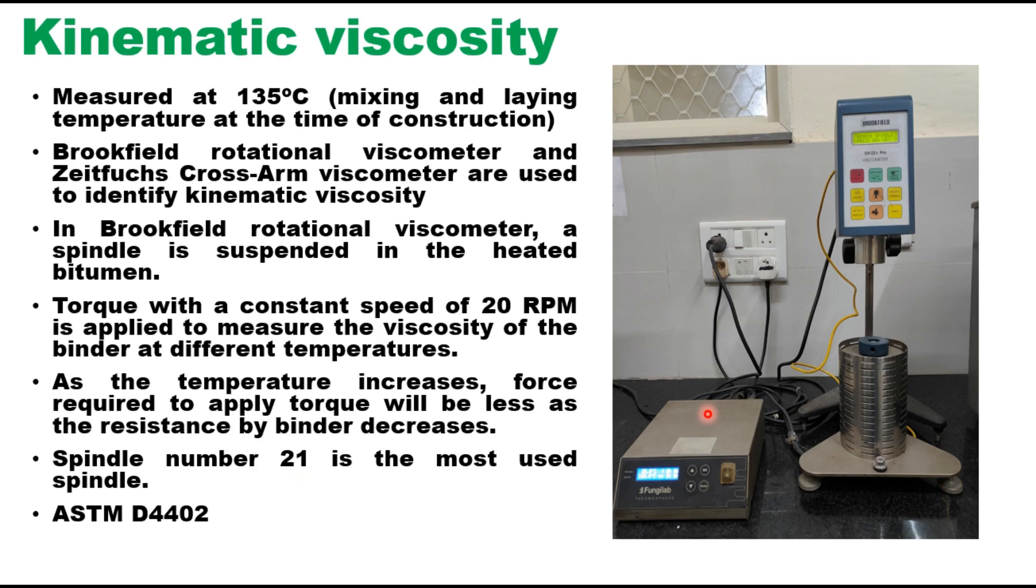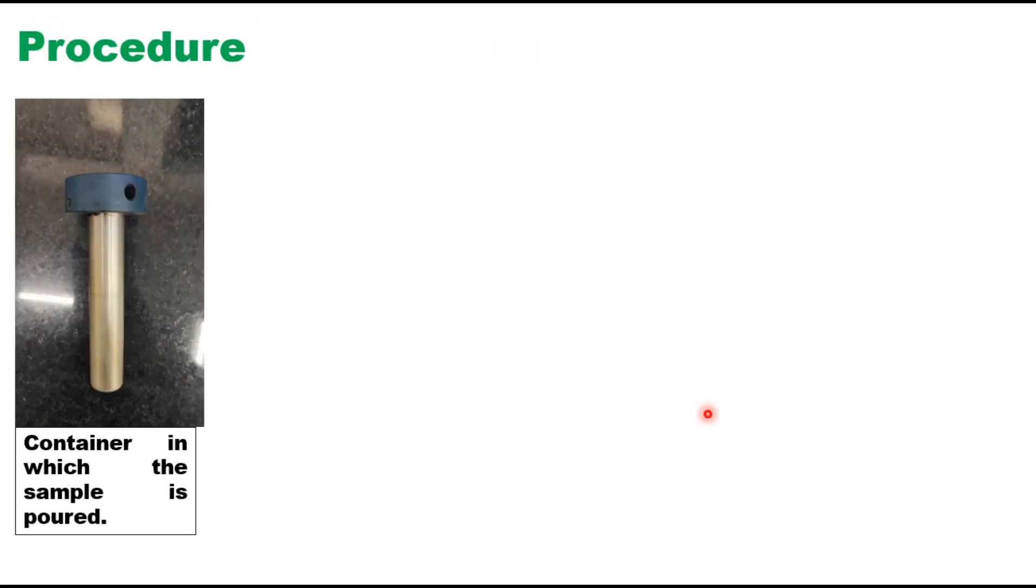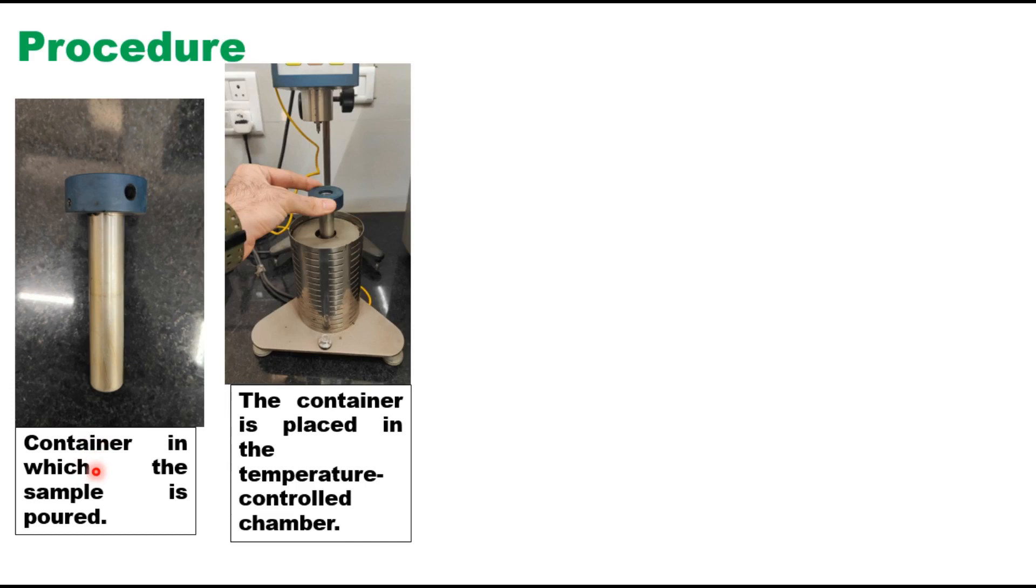So, Brookfield viscometer is a rotational viscometer. A measuring body called spindle is used to generate the resistance. So, the first step is to take appropriate amount of the binder in the container. Then this container is placed in the temperature control chamber and a preheated spindle is inserted into the bitumen in the chamber and coupled to the viscometer as per instruction given in the viscometer manual.